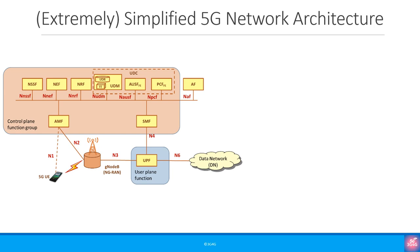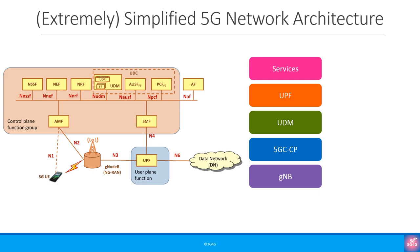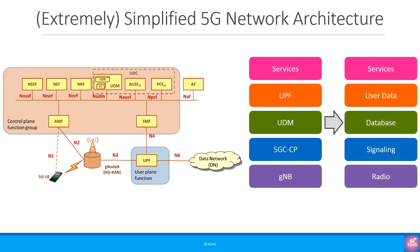We have discussed the basics of non-public networks as planned for Release 16 — remember this was at a very high level; the specifications go much further in depth. Now let's discuss the deployment architectures of non-public networks. I will use the service-based architecture picture we looked at earlier, simplified to show: the gNodeB, the 5G control plane, UDM (unified data management), the user plane function UPF, and services — or simply radio, signaling, database, user data, and services.